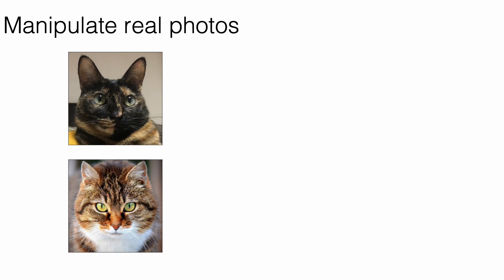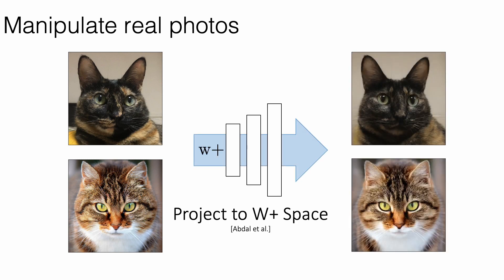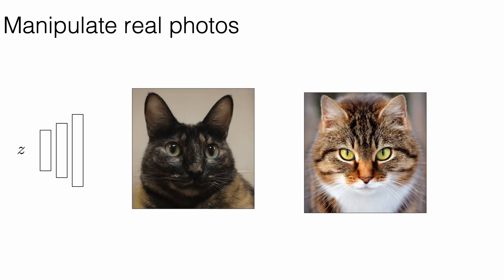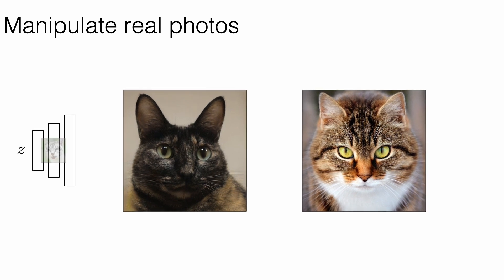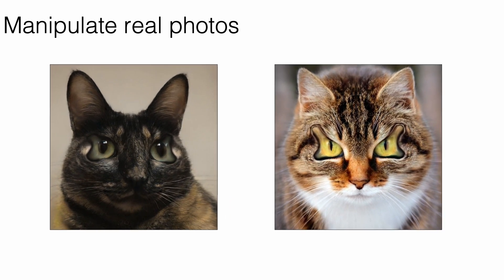Once we have a warped GAN, we can also use it to automatically warp real images. Here, we start with two real cat photos. Then, we find the latent code in the original cat model that resembles the cats by image projection. Finally, we feed the latent code to our edited model to change the shape of eyes. The warping is totally automatic, and can be used to follow the shape of any warp GAN.